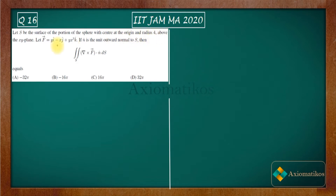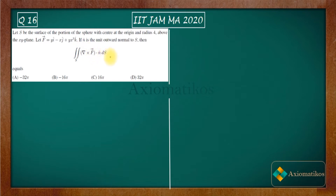radius 4, above the XY plane. So you have a sphere with center at the origin and radius 4, and you have to consider that sphere above the XY plane. Now you have a force F given by this expression, and n̂ is the unit outward normal to S. Then what you have to do is calculate this surface integral of (∇×F)·n̂ dS.